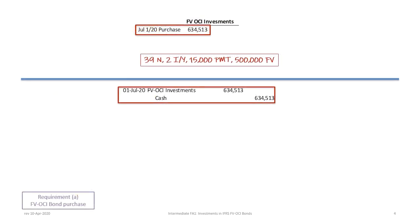The first entry is to record the acquisition or purchase of the bonds on July 1, 2020. Remember the present value is required with 39 periods, 2% interest (which is one half of the 4% yield to maturity), and a $15,000 payment (which is one half of the 4% regular interest payment, or 2% of the $500,000 face value), plus the face value as FV in your calculator. So the present value is $634,513. We'll debit FVOCI investments and credit cash for $634,513.